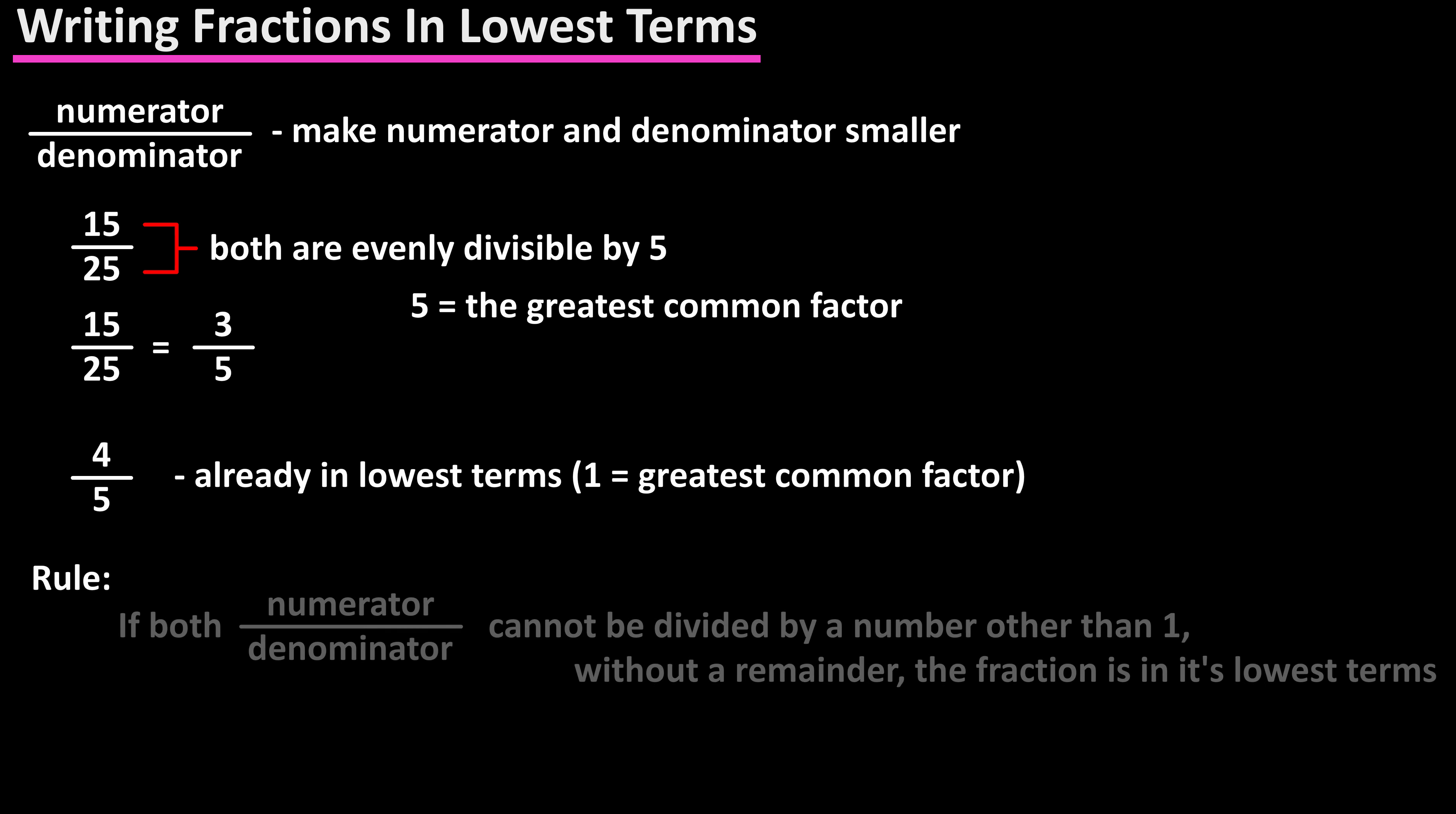The rule is that if both the numerator and denominator of a fraction cannot be divided by a number other than one without a remainder, the fraction is in its lowest terms. This means there is no common whole number other than one that will divide evenly into both the numerator and denominator.